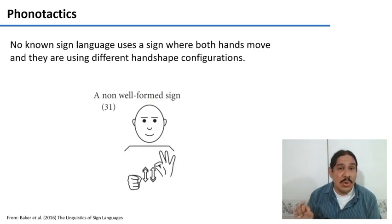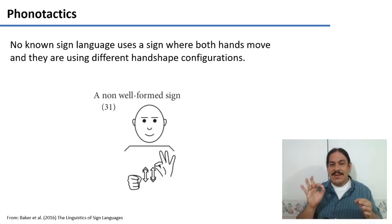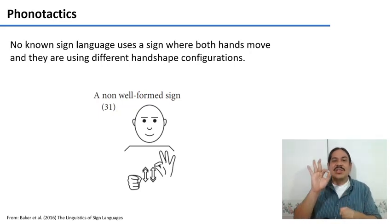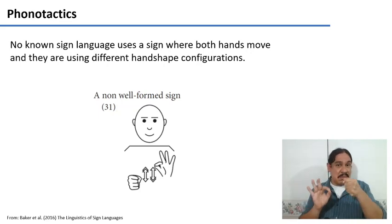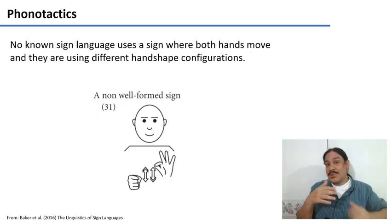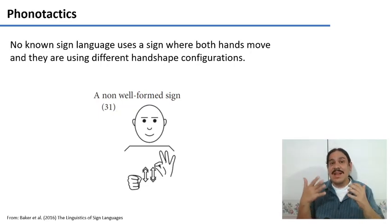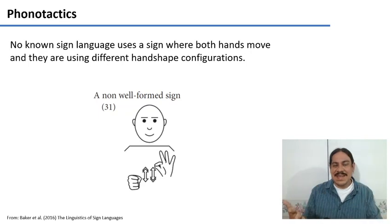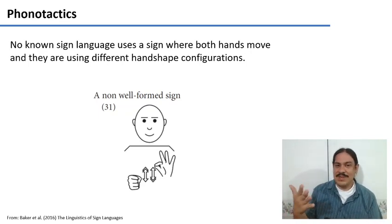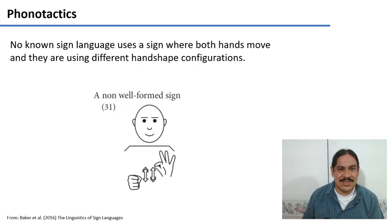There's no known sign language where you have two different shapes and motion at the same time. At least no one has seen a sign language that does this. So we assume that the phonotactics of sign languages do not allow for such motions. Same as in English, you cannot have a V and an F as the onset of a syllable.